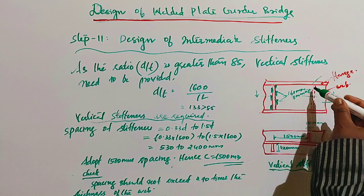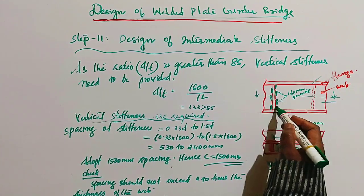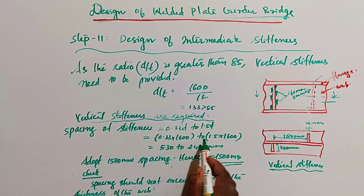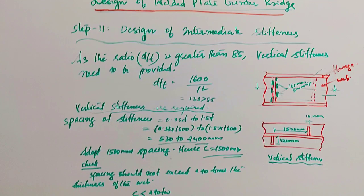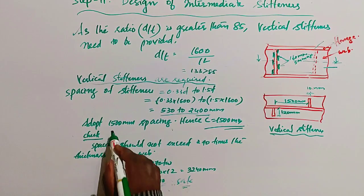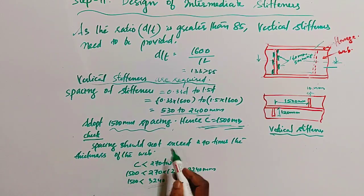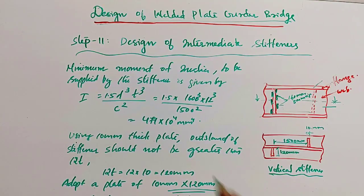The spacing of the intermediate stiffener ranges from 0.33d to 1.5d, that is 0.33×1600 to 1.5×1600, giving 530 to 2400 mm. Adopt a spacing of c = 1500 mm. Check: the spacing should not exceed 270 times the web thickness, i.e., c < 270 × t_w = 270 × 12 = 3240 mm. Since 1500 < 3240, hence safe.